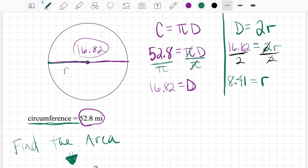So radius equals 8.41. Exactly half. So now that I have the radius, now I can do the final part of the problem, what we were assigned, which is area equals pi times r squared.